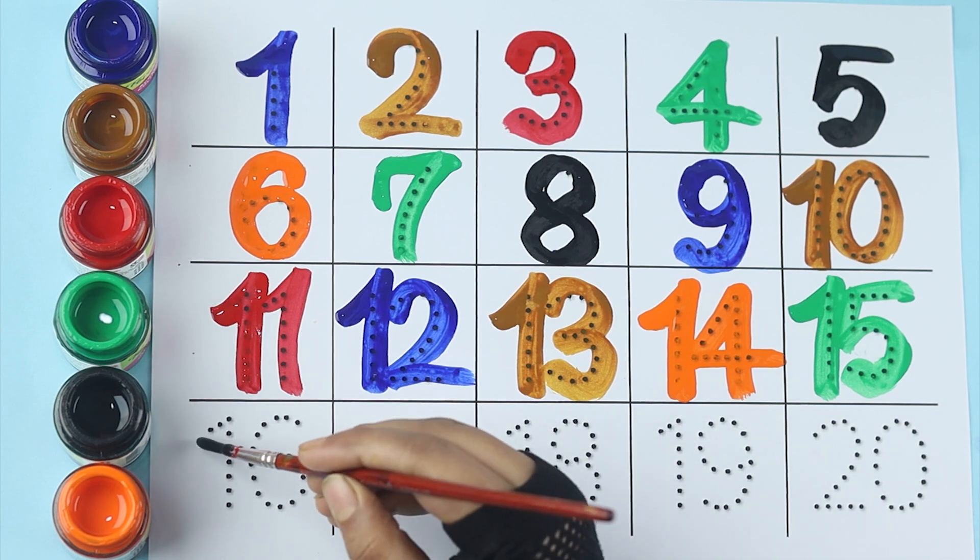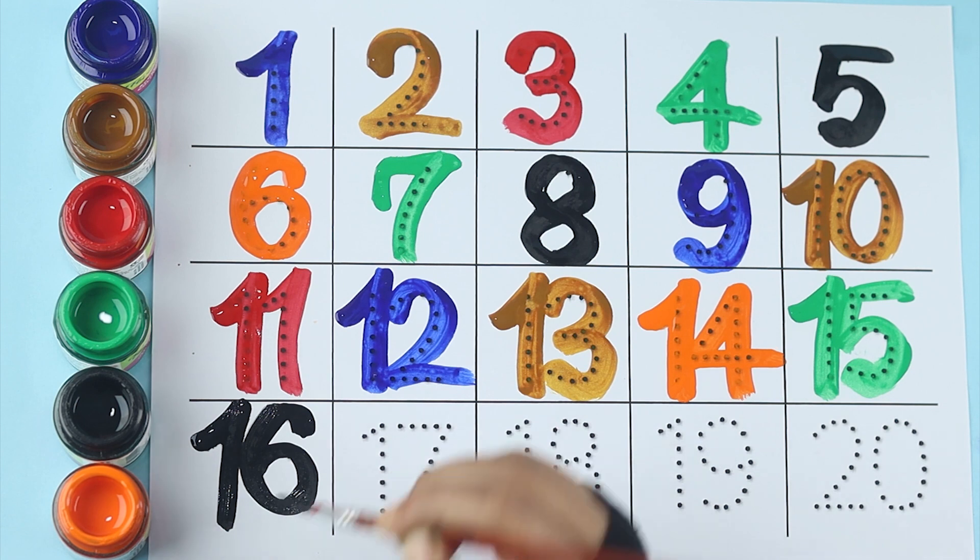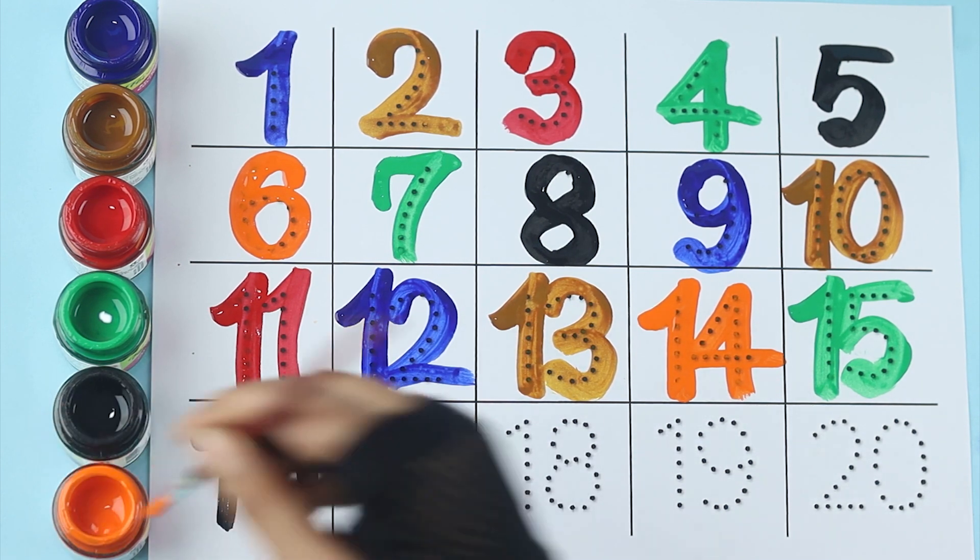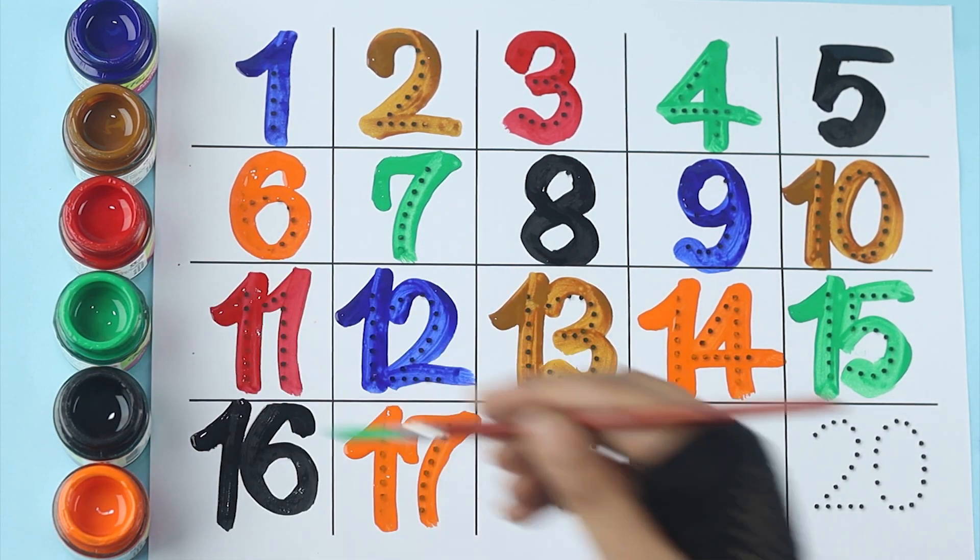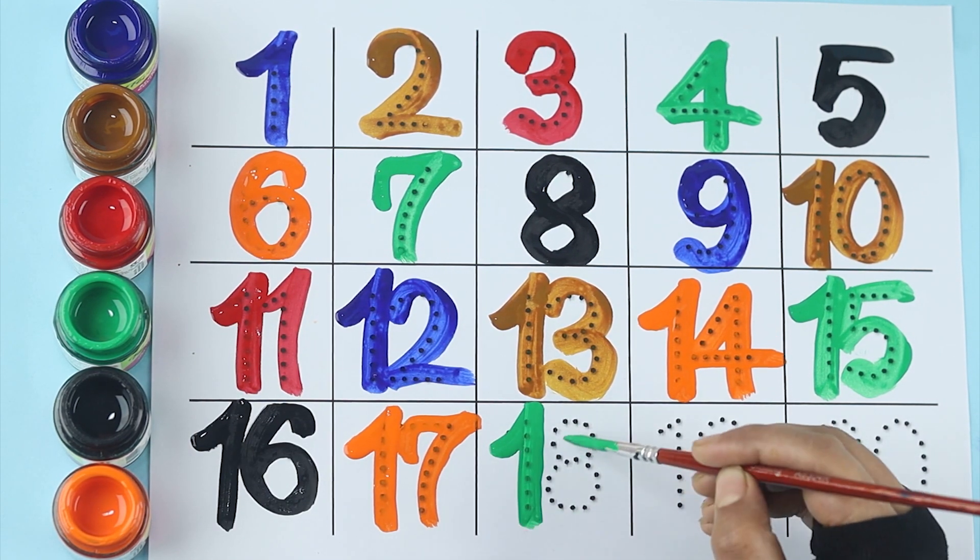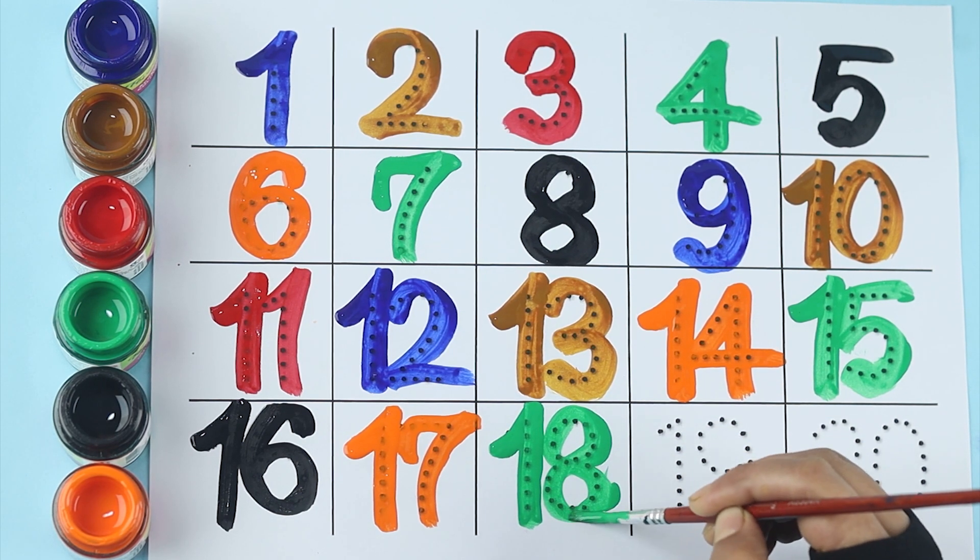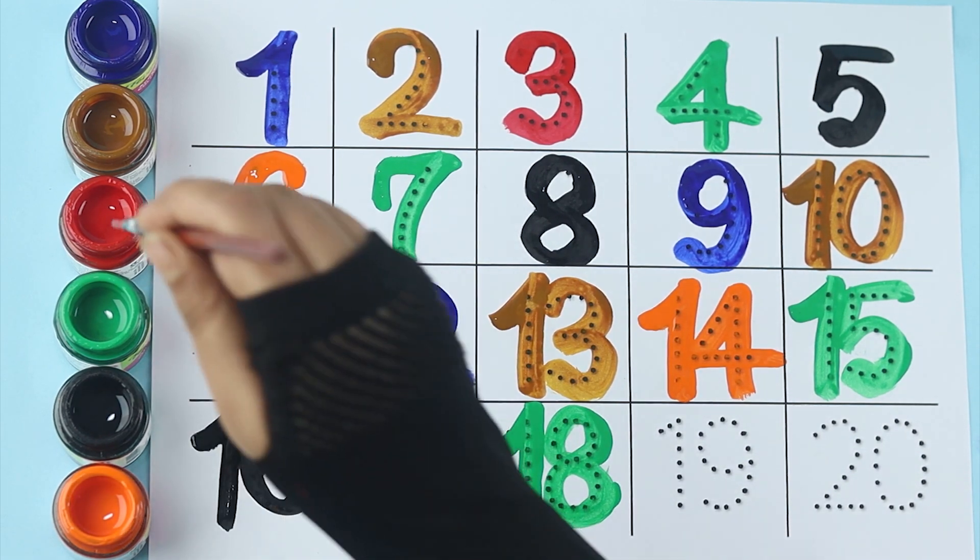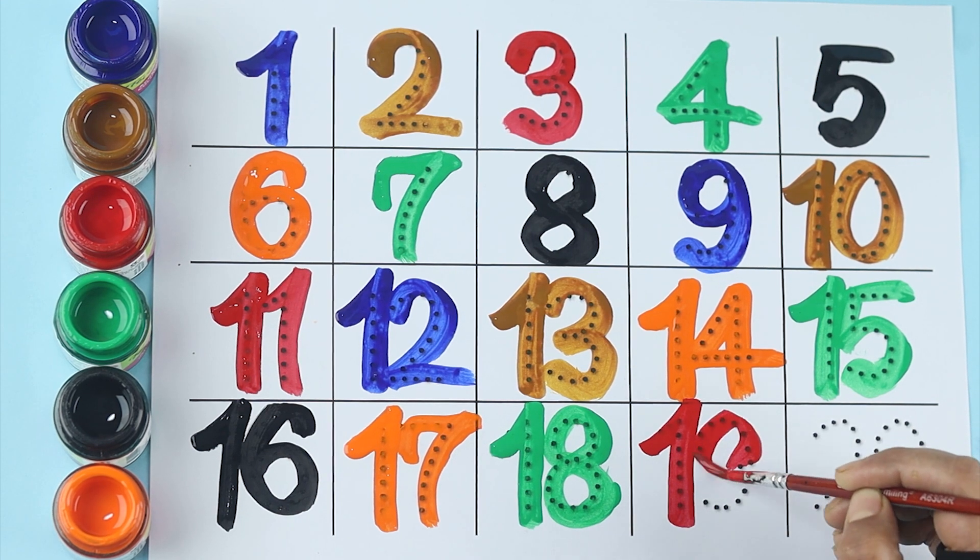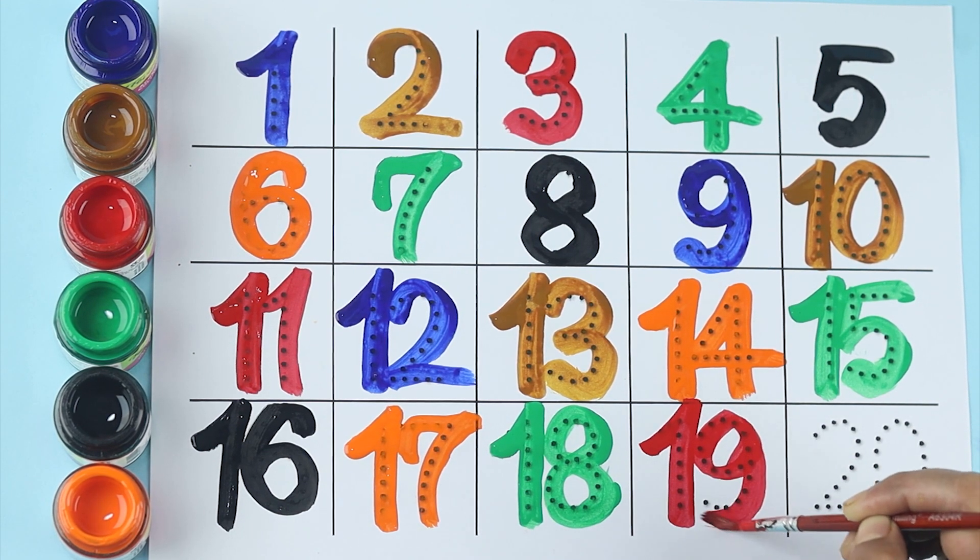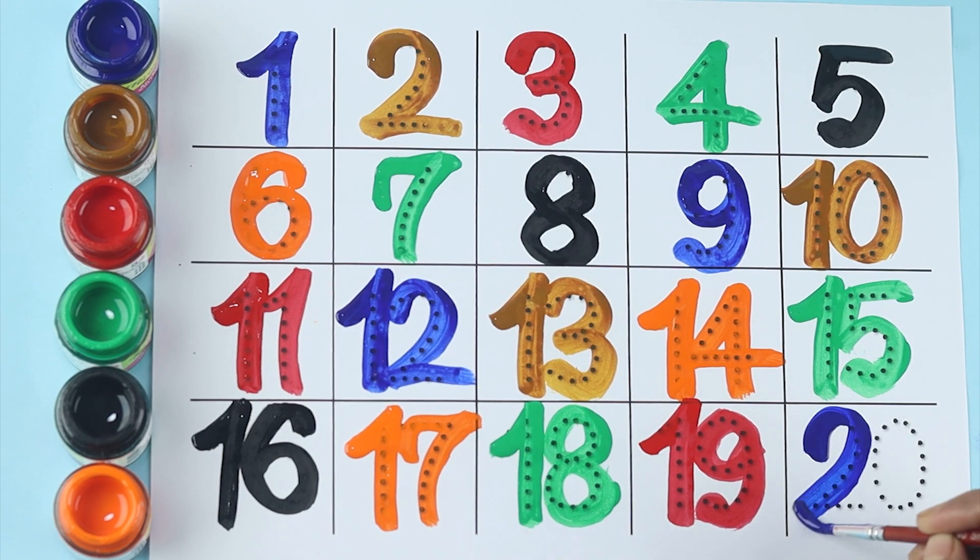Black color sixteen. Orange color seventeen. Green color eighteen. Red color nineteen. Blue color twenty.